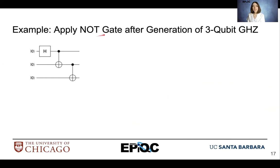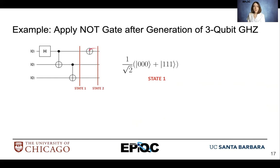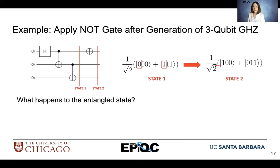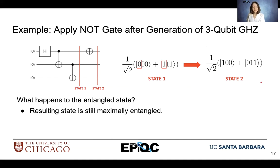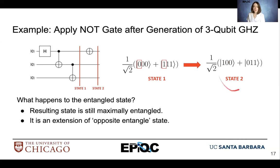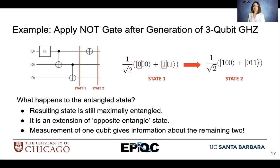Let's do an example. We're going to apply a NOT gate after the generation of the three-qubit GHZ state. After applying the NOT gate to the first qubit, that causes it to flip its value. So now we have ket-100 and ket-011, both multiplied by 1 over square root of 2. This resulting state is still maximally entangled because we cannot factor it and we have 1 over square root of 2 multiplying both basis values. This state is an extension of the opposite entangled state, and all three qubits must be treated as a combined system.